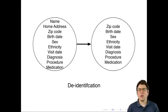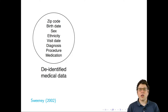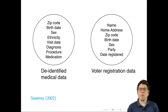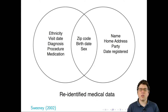Sweeney started with the de-identified medical data and then acquired voter registration data. The voter registration data included name, home address, zip code, birth date, sex, party, and date registered. Both data sets had certain fields in common: zip code, birth date, and sex. Sweeney was then able to merge on these fields and connect the name and home address to the diagnosis and procedure.